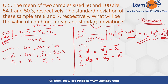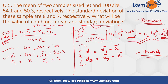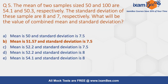These are quite lengthy questions and take practice to quickly solve. There can also be one-mark questions where you only need to find standard deviation using this formula. Once you solve the question, you will find the combined mean is 51.57 and the combined standard deviation is 7.5.